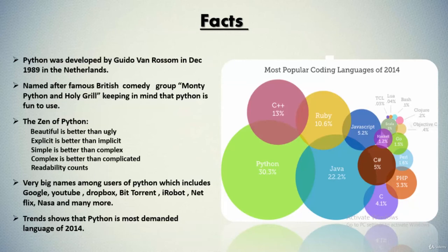Now for some facts about Python: Python was developed by Guido van Rossum in December 1989 in the Netherlands. The language was named after the famous British comedy group Monty Python and the Holy Grail, keeping in mind that Python is fun to use. The Zen of Python includes principles such as: beautiful is better than ugly, explicit is better than implicit, simple is better than complex, complex is better than complicated, and readability counts.